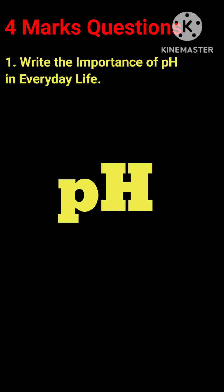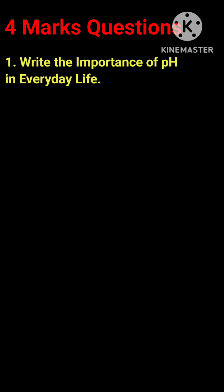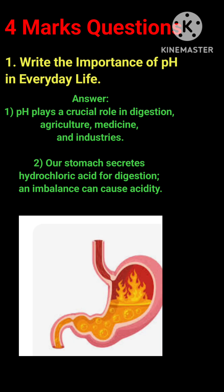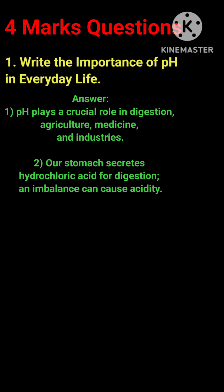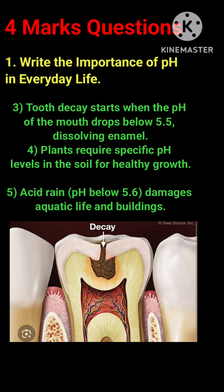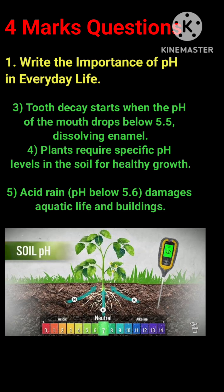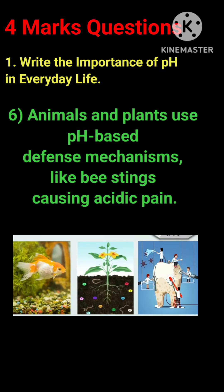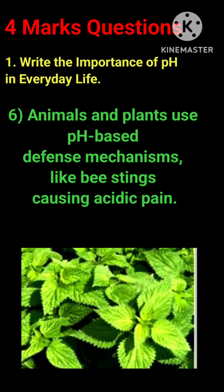Eight-mark question. Question 1: Write the importance of pH in everyday life. Answer: pH plays a crucial role in digestion, agriculture, medicine, and industries. The stomach secretes hydrochloric acid for digestion; an imbalance can cause acidity. Tooth decay starts when the pH of the mouth drops below 5.5, dissolving enamel. Plants require specific pH levels in the soil for healthy growth. Acid rain (pH below 5.6) damages aquatic life and buildings. Animals and plants use pH-based defense mechanisms in ecosystems.